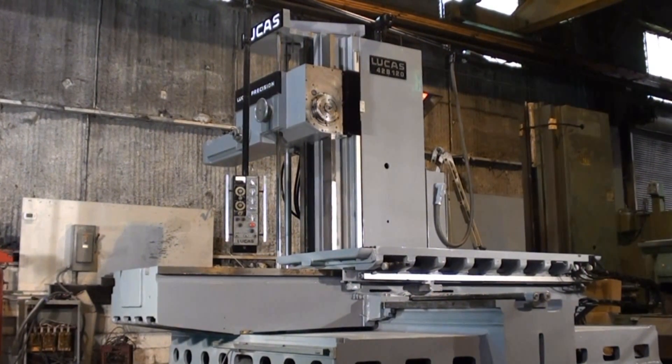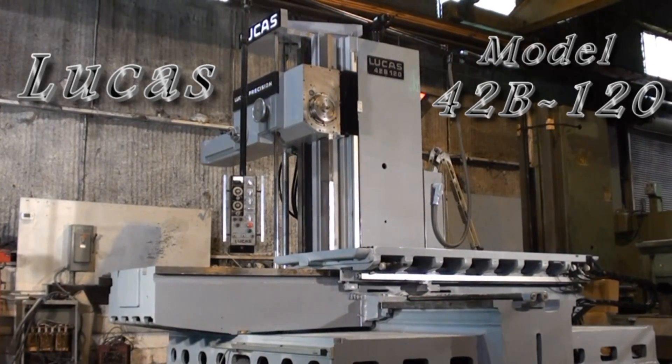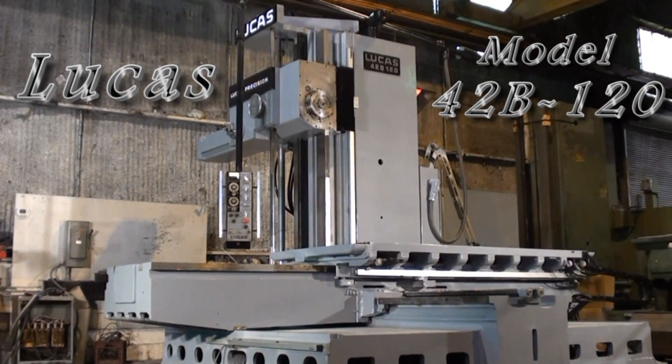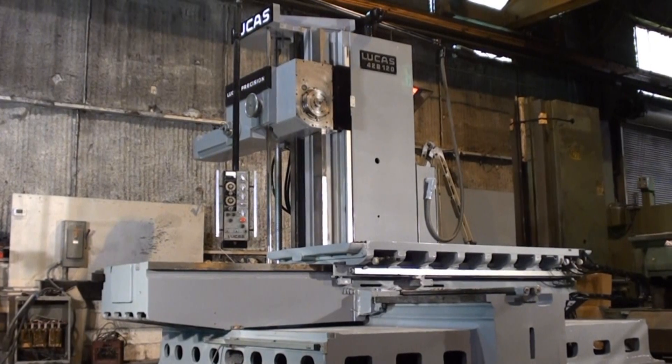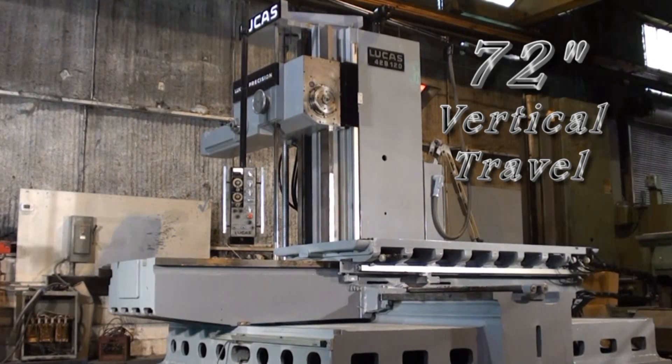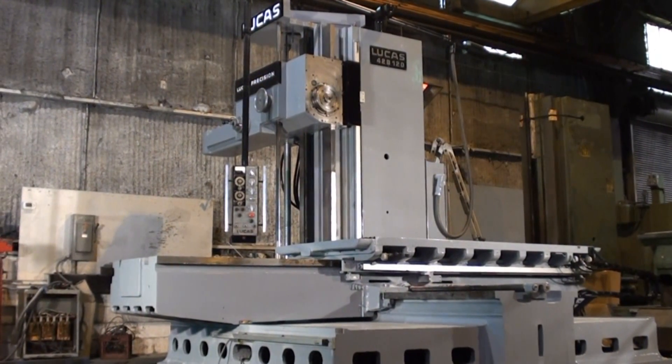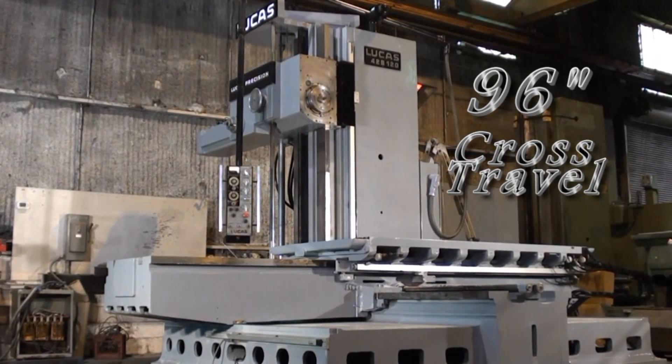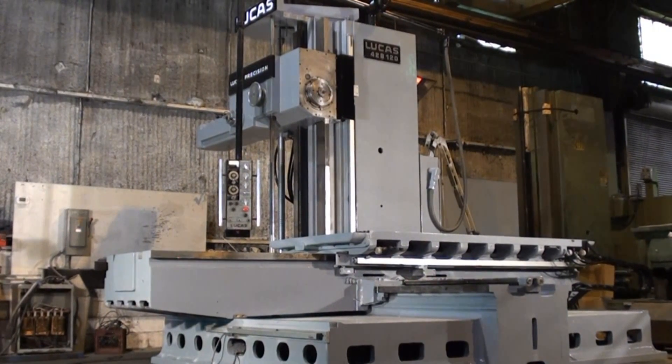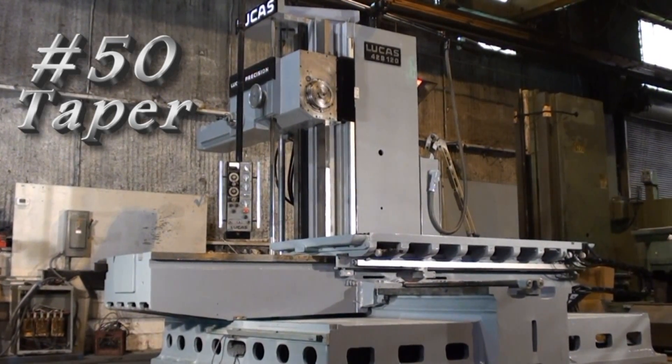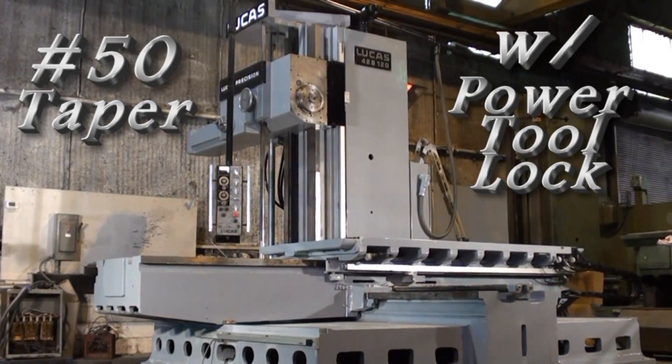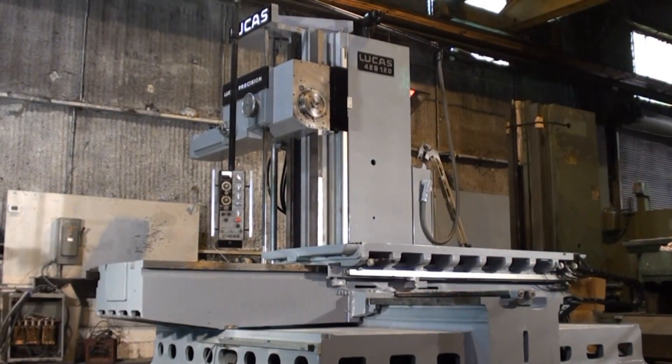Today we're going to get an overview of our Lucas 42B120 horizontal boring mill. This machine has 72 inches of vertical travel of the headstock and 96 inches of cross travel of the main table. We'll go ahead and run the machine in every aspect and try to give you a very good picture of the condition of this machine.